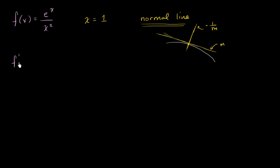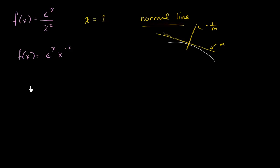Let me rewrite this a little bit. So f of x is equal to e to the x times x to the negative 2. I like to rewrite it this way because I always forget the quotient rule. I like the power rule a lot more, and this allows me to use the product rule instead of the quotient rule.